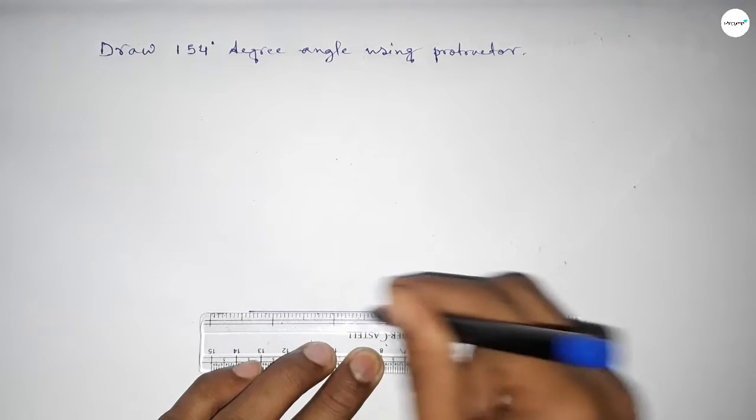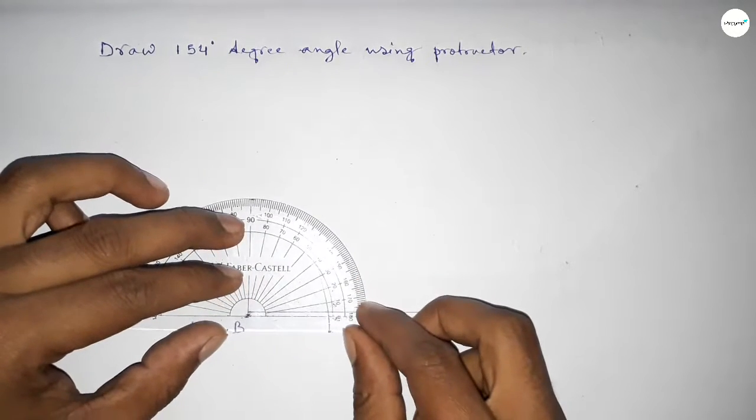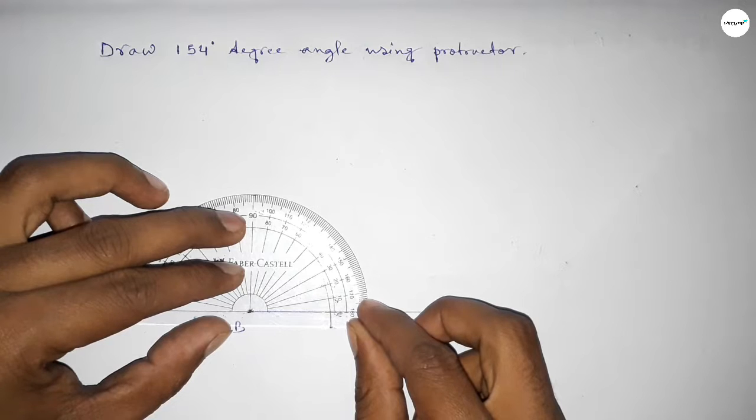Next, take point B here and point C here. Now put the protractor on point B perfectly, then start counting the angles.